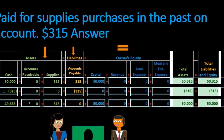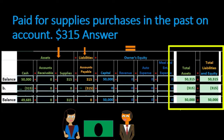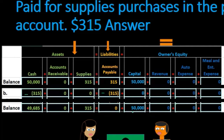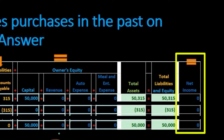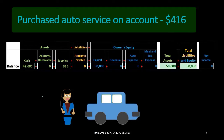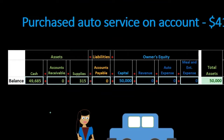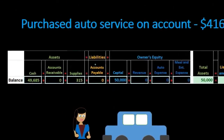Revenue, expense, and expense all remain zero. Total assets are cash $49,685 plus supplies $315, totaling $50,000. Liabilities and equity are zero in payables and $50,000 in capital, also totaling $50,000. There is no effect on net income — no effect on revenue or expenses. Next transaction: purchased auto service on account for $416. Is cash affected? No, because we purchased it on account, so accounts payable will be affected.